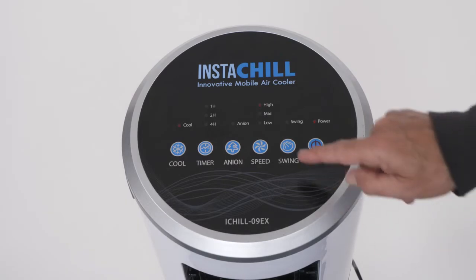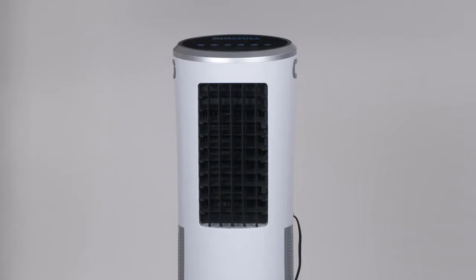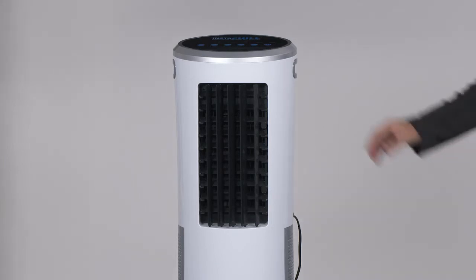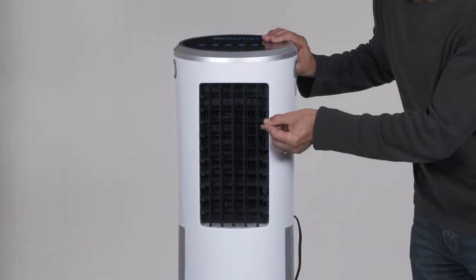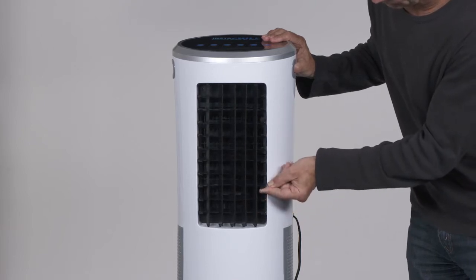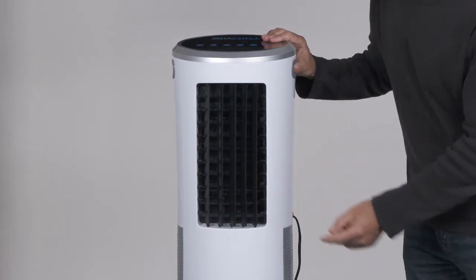The next button on this panel is the swing function. Pressing this will oscillate the airflow side to side. On the side of the air outlet grill are two levers that control the vertical airflow. Each lever allows you to individually control one half of the cool air.